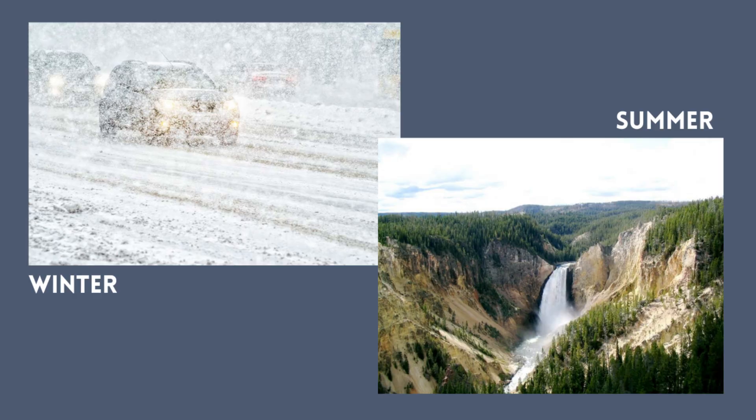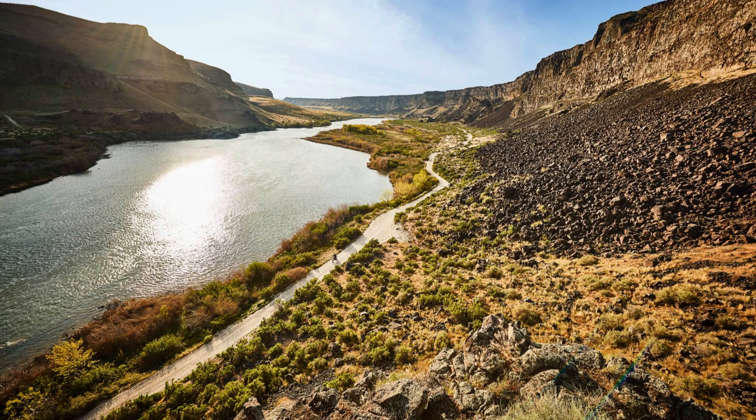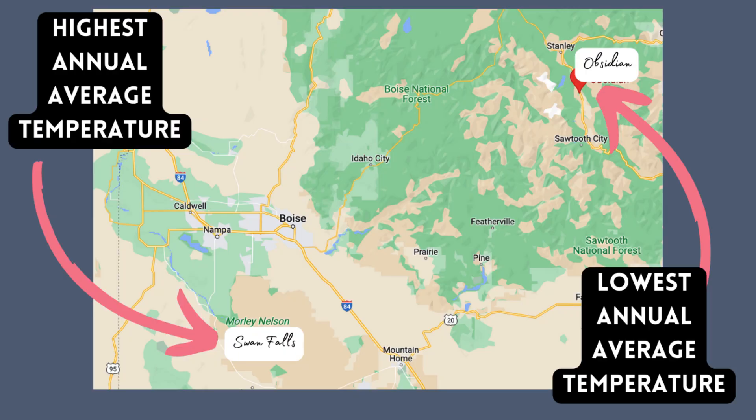Eastern Idaho's climate is more similar to mid-continent than the west and north, a fact evident by the greater range between winter and summer temperatures. The highest annual average temperature is 55 degrees at Swan Falls. You can find the highest annual averages in the lower elevations of Bliss, Lewiston, and Boise. Obsidian, at an elevation of 6,780 feet, has the lowest average annual temperature of 35.4 degrees Fahrenheit. Riggins and Lewiston have no month in the year with a mean temperature below freezing — the lower the elevation, the fewer days of freezing per year.